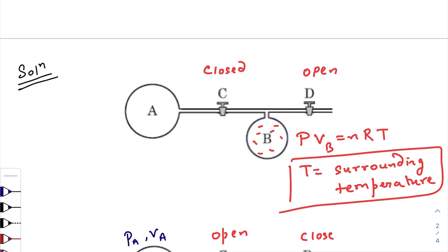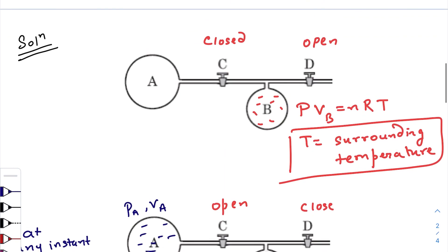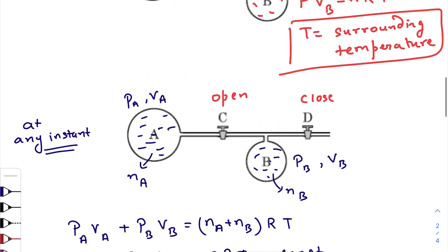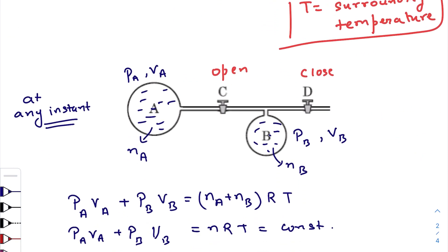The temperature will be equal to the surrounding temperature as the material is conducting. Fine, so gas is here. Now what happens? This is closed, this is opened. At any instant some amount of gas will be transferred here. Let us consider at that instant the pressure of flask B is PB, volume remains constant of course, and pressure of flask A is PA.